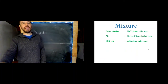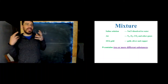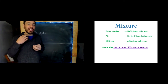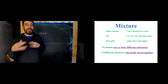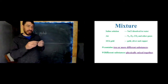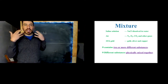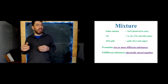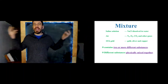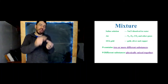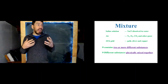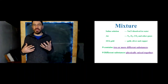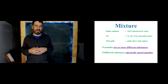A mixture consists of two or more substances that are physically mixed together, not chemically bonded. Saline solution — salt water — is salt and water physically mixed, so it's not a pure substance. Air is also not a pure substance; it's nitrogen, oxygen, carbon dioxide, argon, water vapor, and many other gases all physically mixed together. Even if a mixture is evenly mixed, it's still not a pure substance because it's made up of multiple different substances.